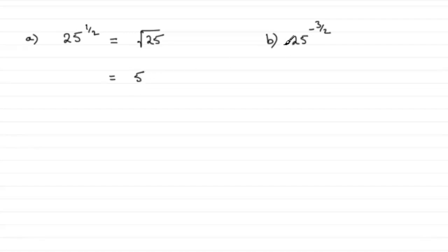Okay, and now for part b, 25 to the power of minus 3 over 2. Whenever you've got a negative power, remember this is the reciprocal, 1 over. 1 over 25 to the positive power of 3 over 2.